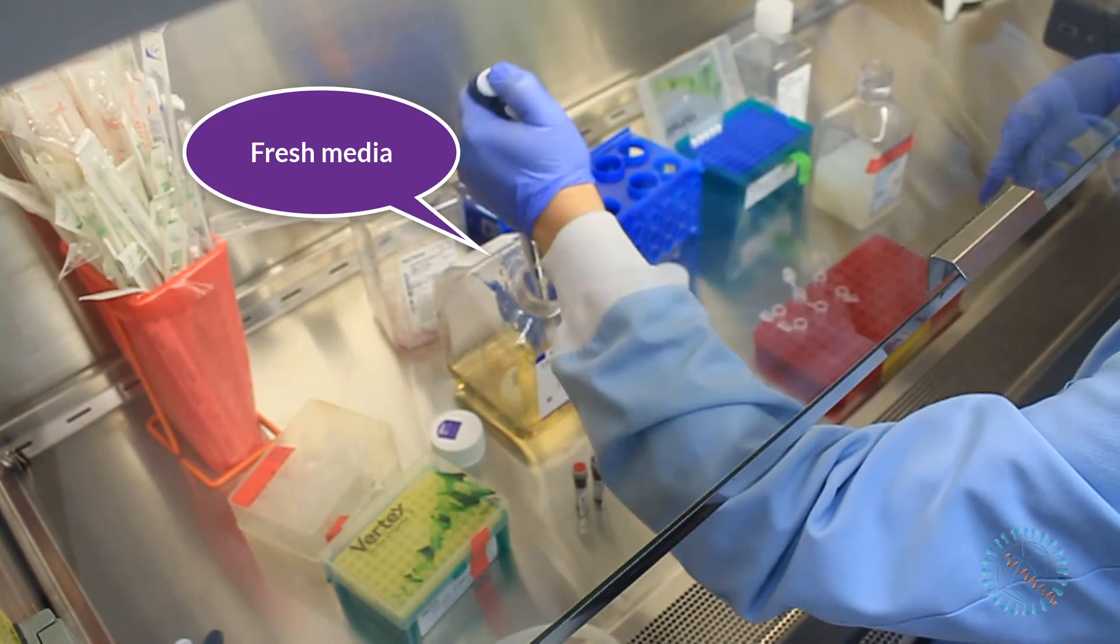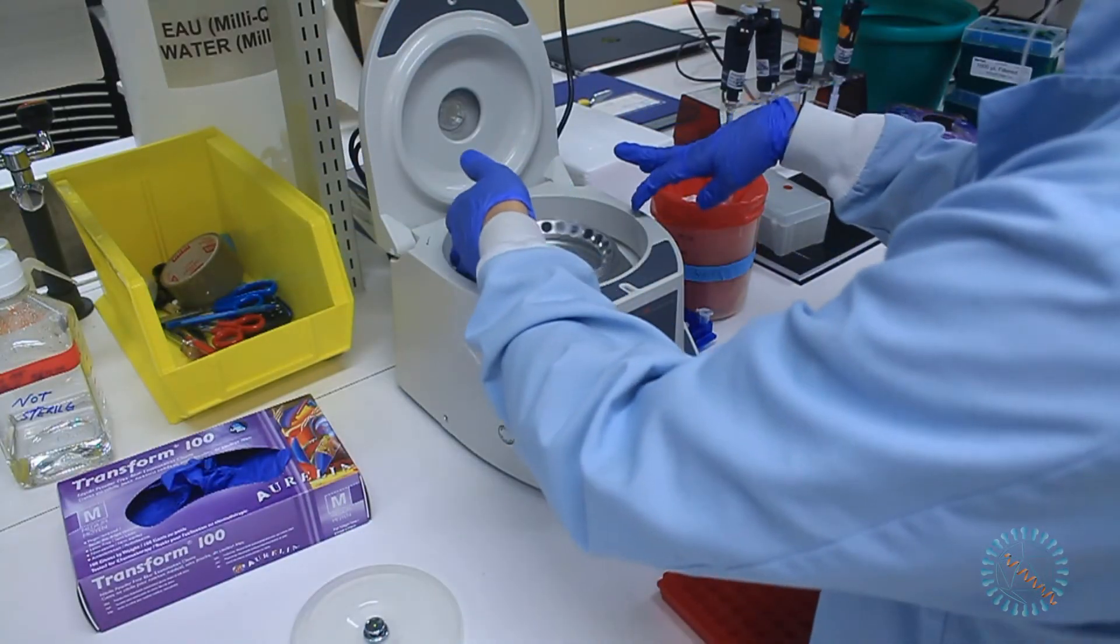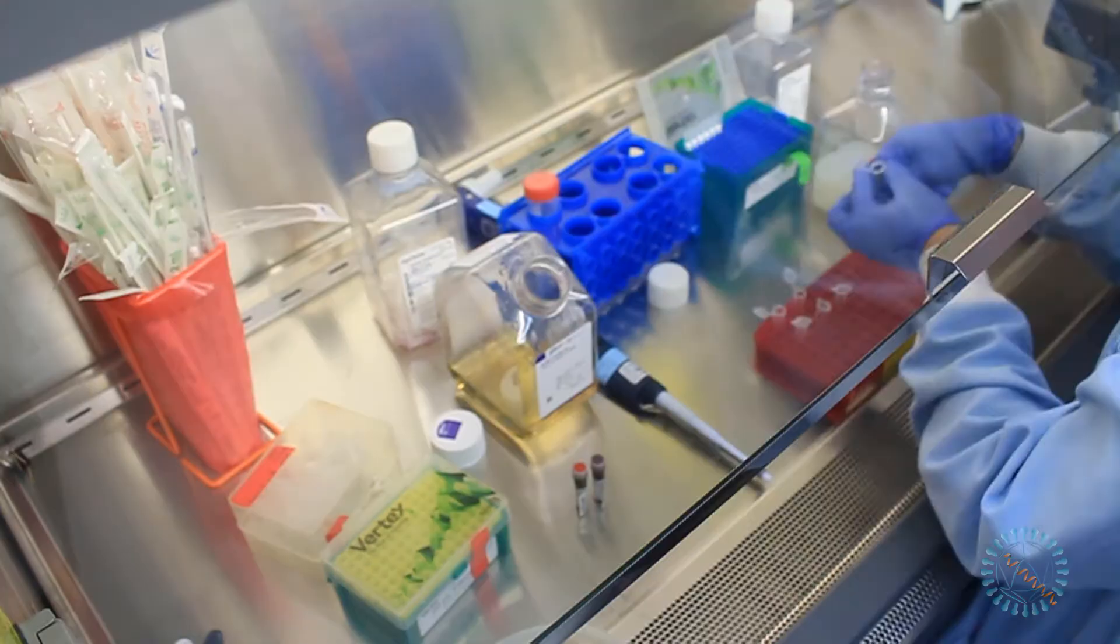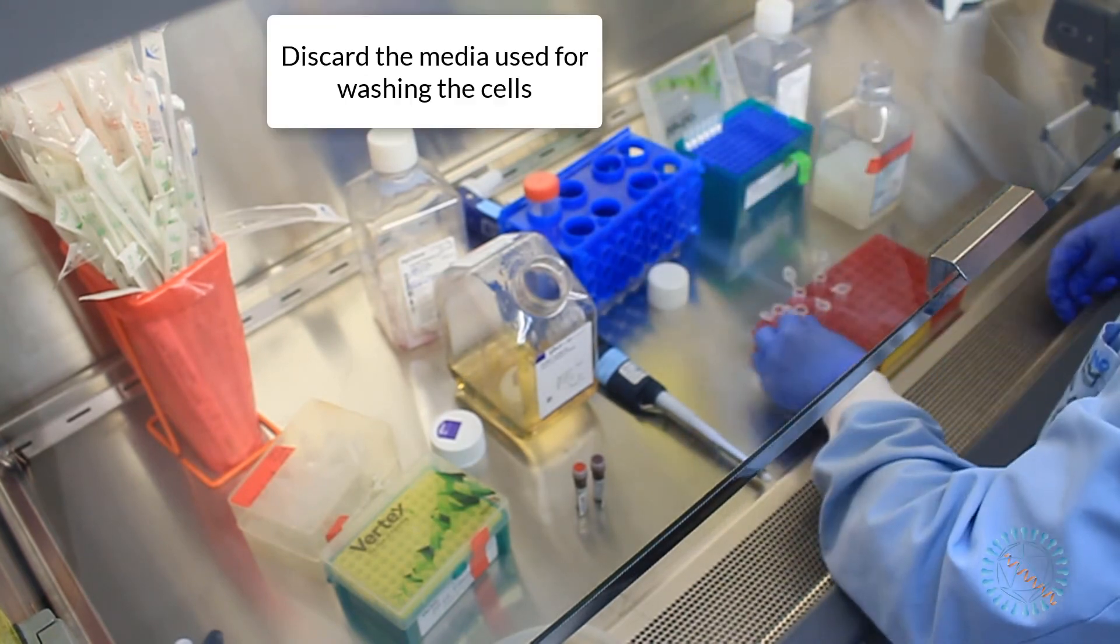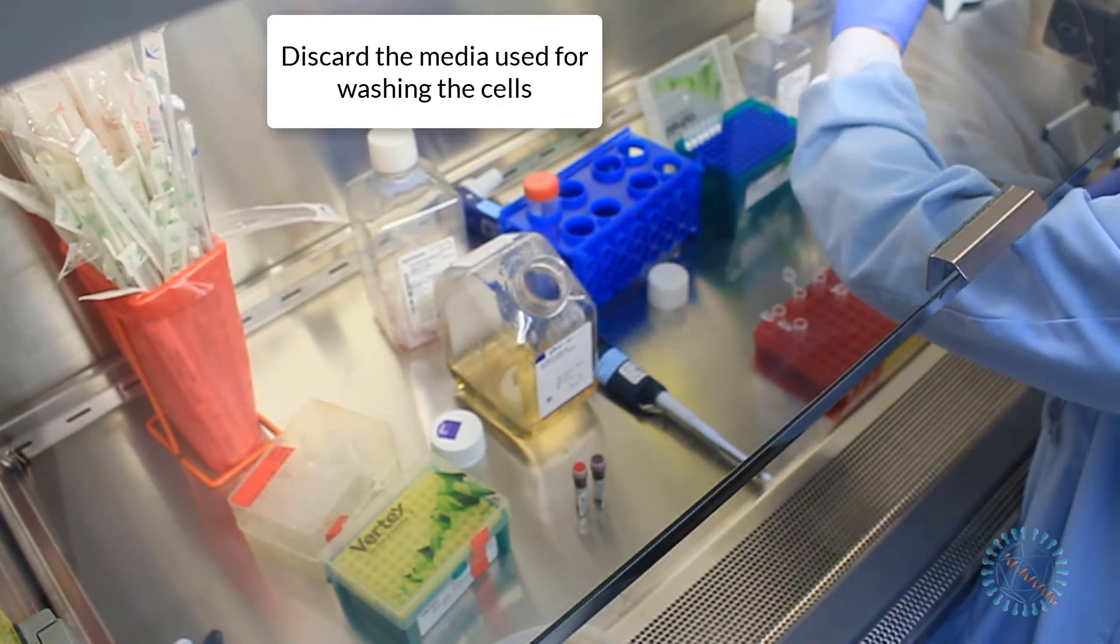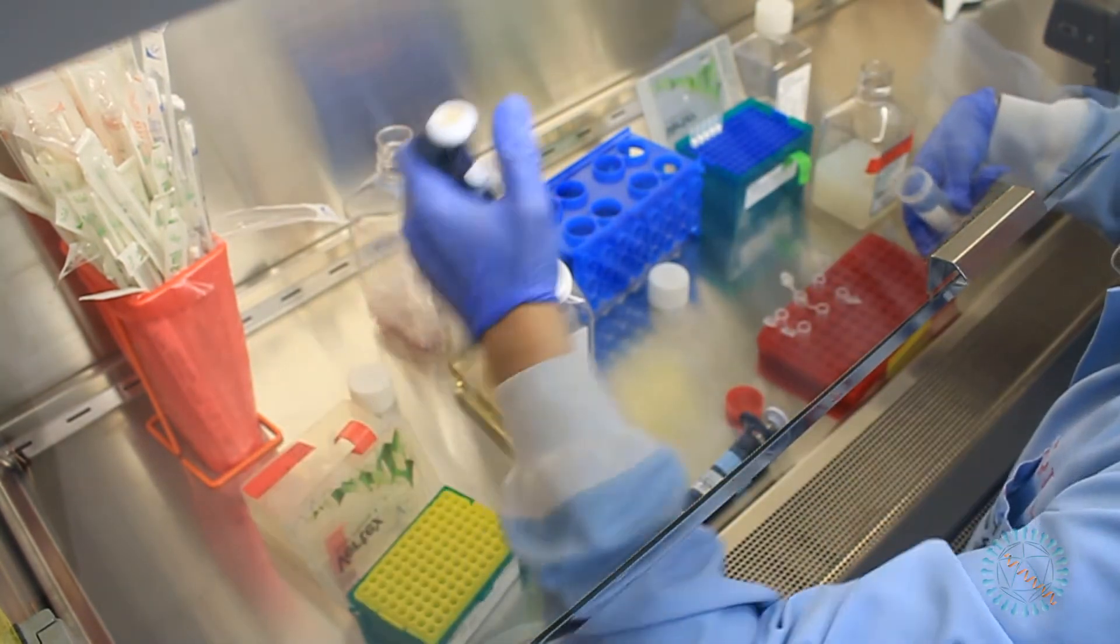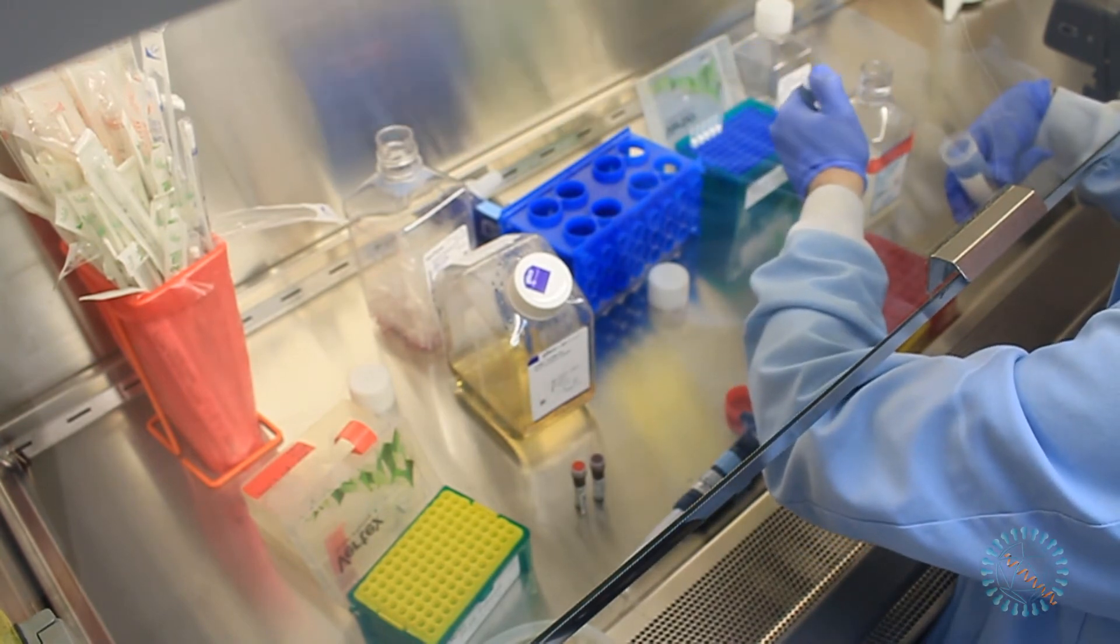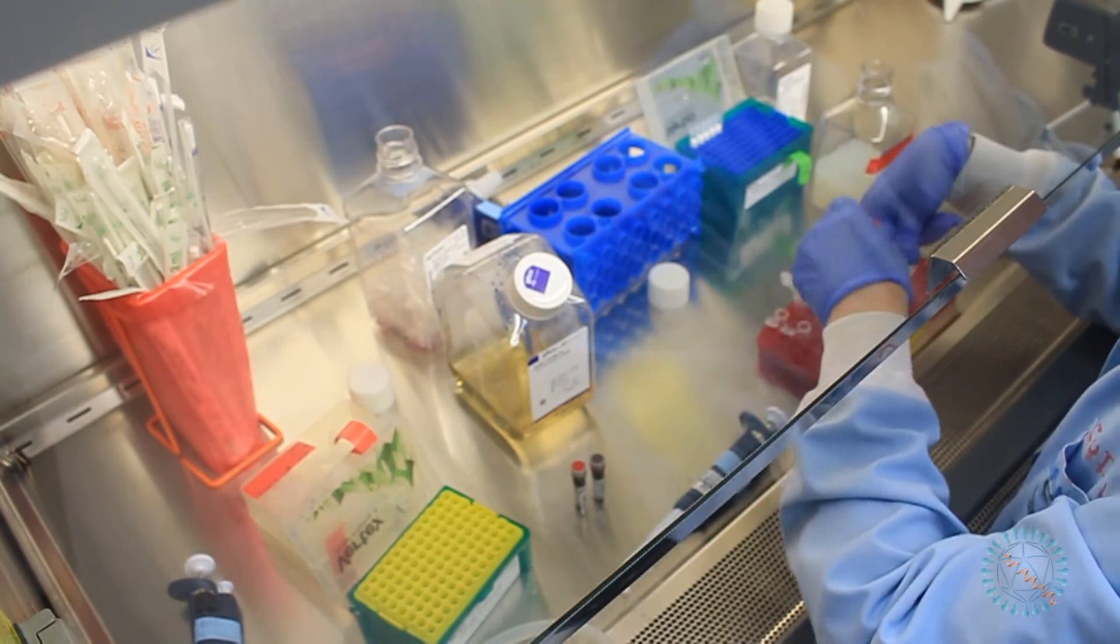Afterwards, we go back to the centrifuge to pellet down the cells for a second time, so that we can complete the wash by removing the freshly added media. After discarding the fresh media, we can now proceed to resuspend the cells in a solution with the toxic substance or in phosphate buffer. For this experiment, cells were incubated for 15 minutes and then moved into the flow cytometer room for the last preparation step.